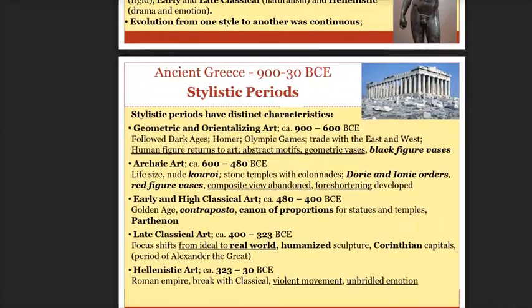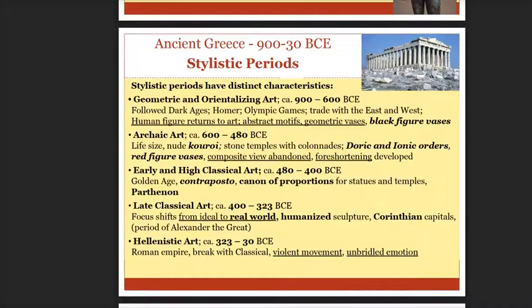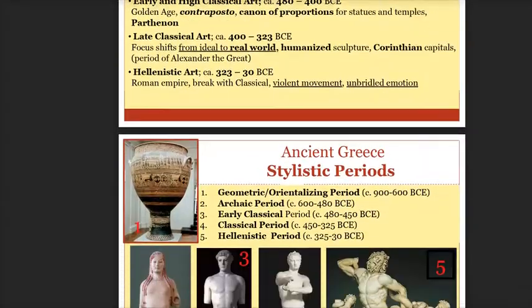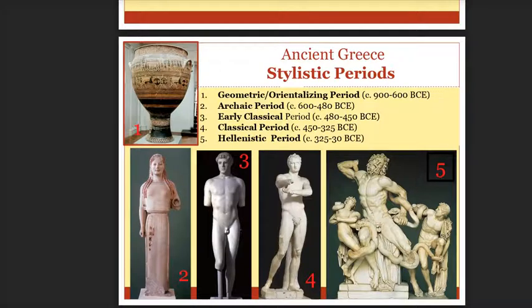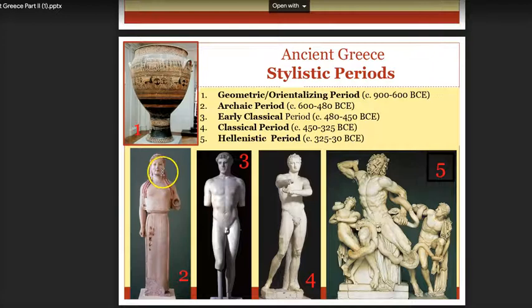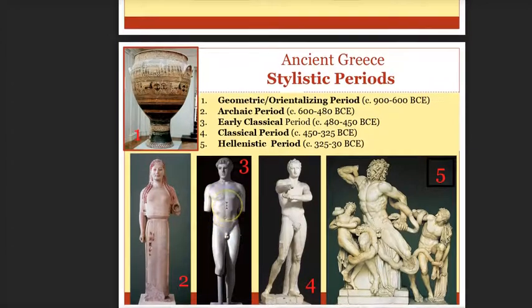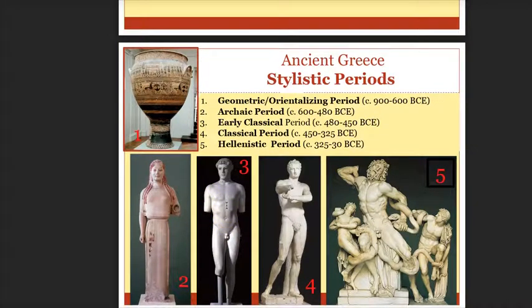Ancient Greece is divided into different stylistic periods based on the characteristics of the architecture and the sculpture we'll find, as well as the time periods. The major stylistic periods are: the geometric or orientalizing period, where forms are very stylized, very geometric; the archaic period, where figures were still very rigid and stiff; and then the early classical period, where you're starting to see the figure being modeled, more muscles showing, more naturalism.